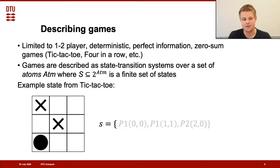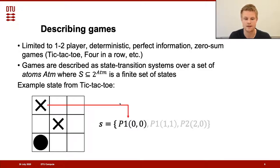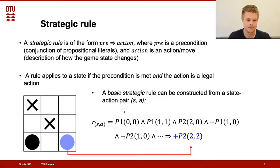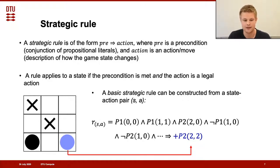We can describe games as state transition systems over a finite set of atoms, where a certain state is just a subset of these atoms. Taking an example from Tic-Tac-Toe, a cross in the top left corner can be expressed with the atom 'player_one(0,0)', meaning that player one has a piece at position (0,0). A strategic rule can be expressed using a precondition, which is a conjunction of literals, and then an action, which is a description of how the game changes. A rule applies to a state if the precondition is met and the action is a legal action.